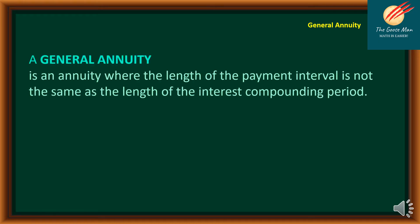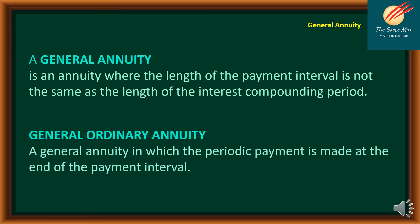Let's have the definition of terms. A general annuity is an annuity where the length of the payment interval is not the same as the length of the interest compounding period. The general ordinary annuity is a general annuity in which the periodic payment is made at the end of the payment interval.